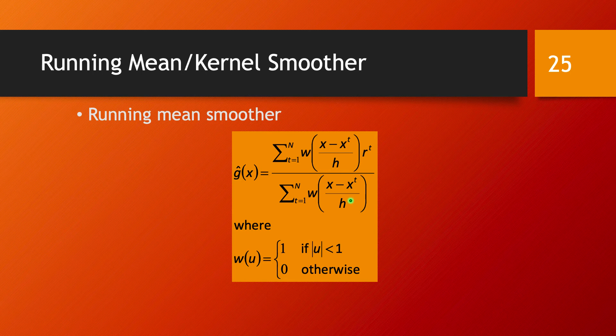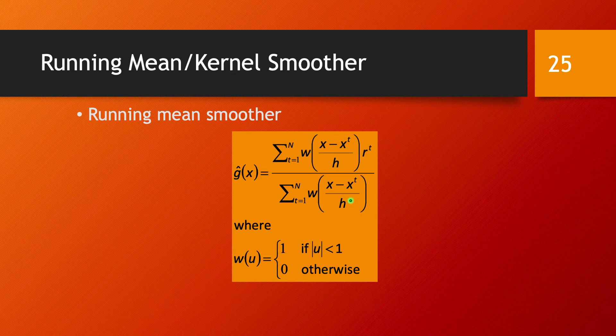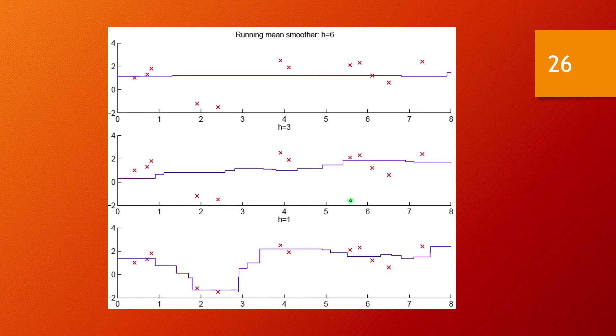That gets rid of the need of defining the bins beforehand. You are now just having a bin centered around your data point. Here is how this would look for an example. You have here the example of H equals 6 and here H equals 3. Obviously you still have discontinuities and that's something that we will address in a moment.